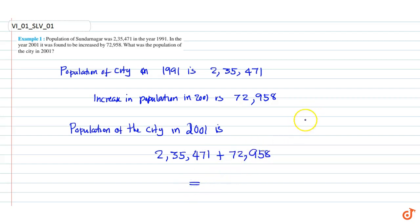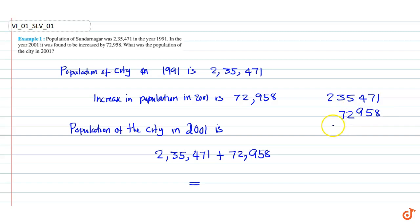This is equal to — working out the addition of 2,35,471 and 72,958 step by step.